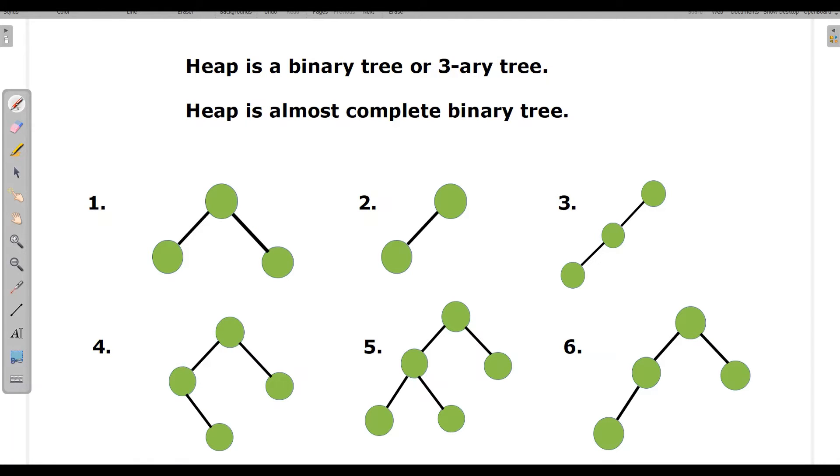As we have read in Wikipedia, heap is a binary tree or three-ary tree. Three itself means which has three branches as well as almost complete binary tree. This we will know with some examples. So with these six structures, let us know is it a complete or almost complete binary tree. So first we have complete binary tree where we have three nodes. So I'll mark it as complete binary tree. When we come to second structure, this is almost complete binary tree. As one node is missing, but anyhow, it is an almost complete binary tree.